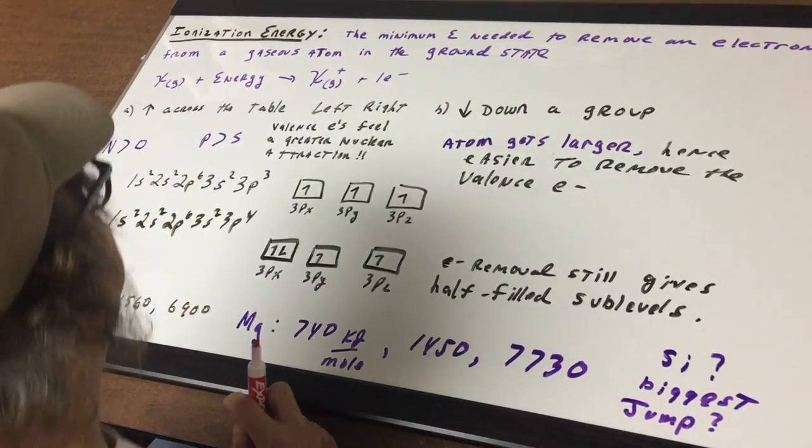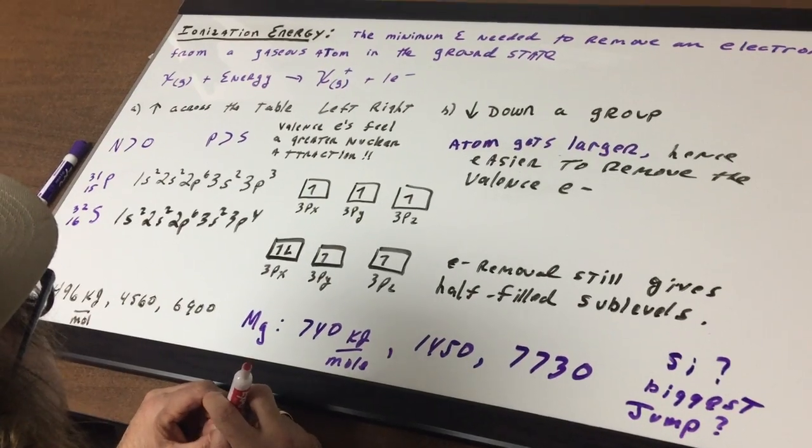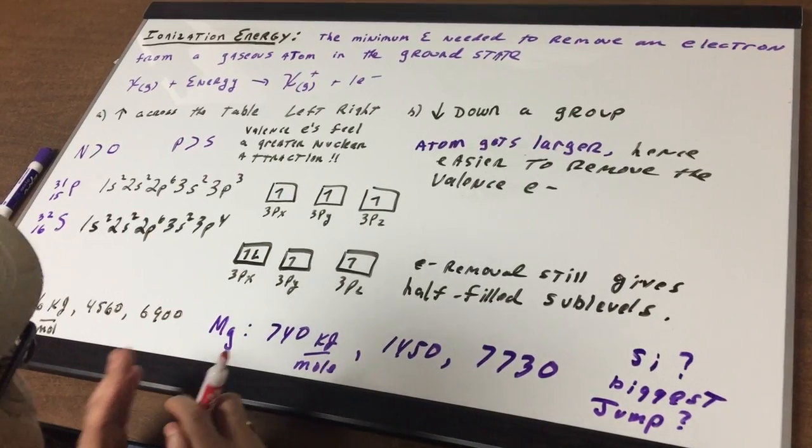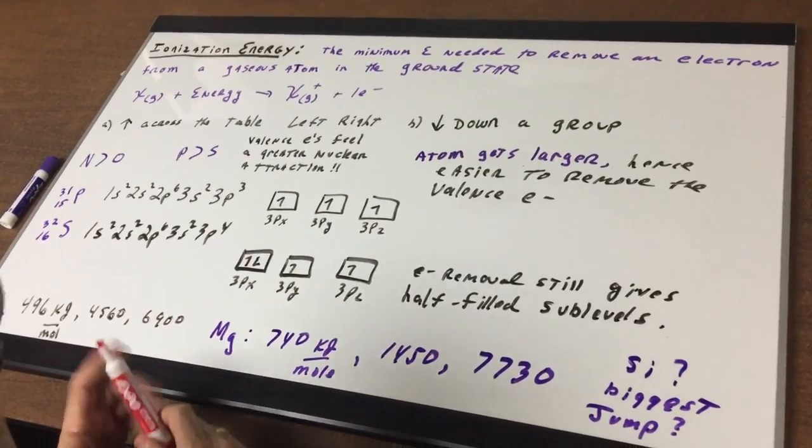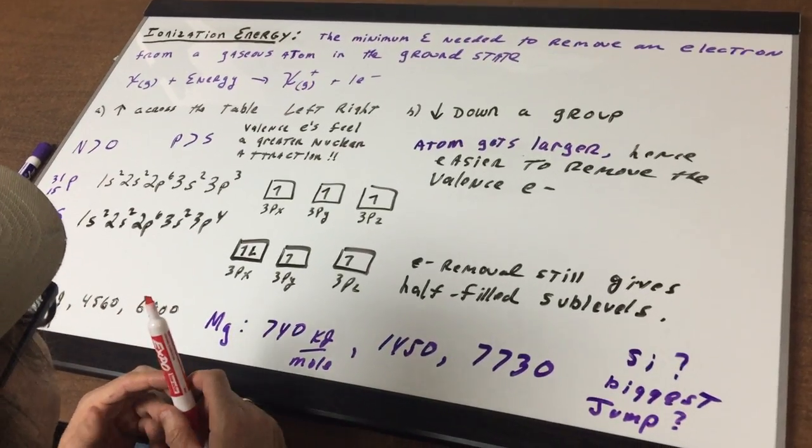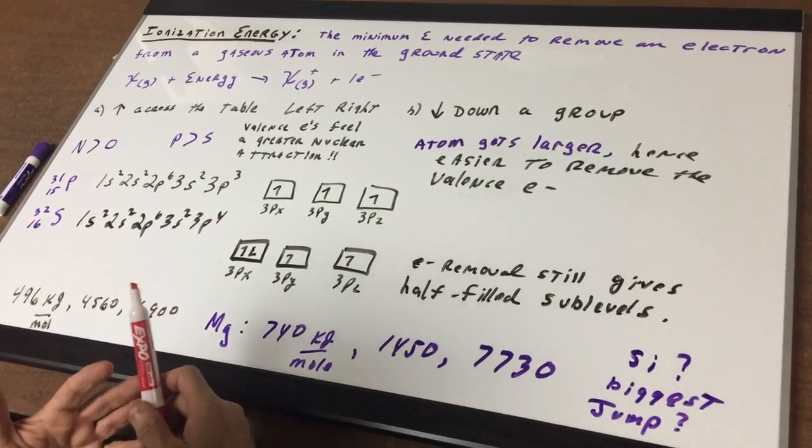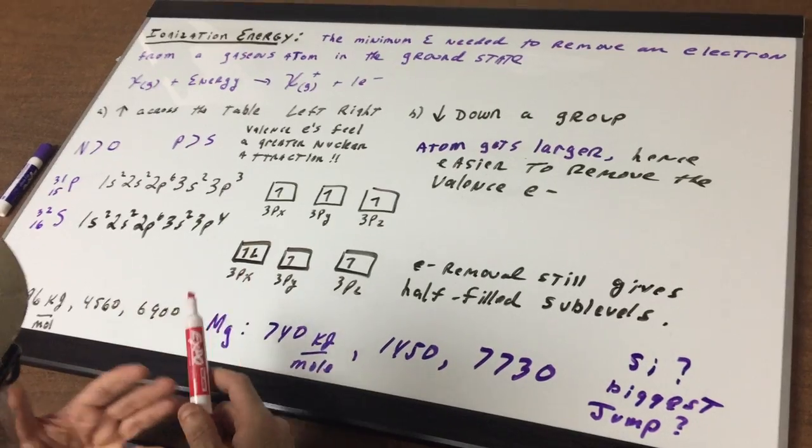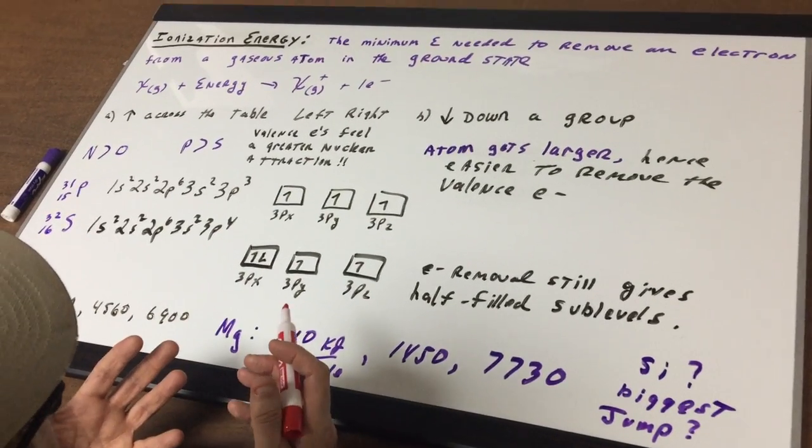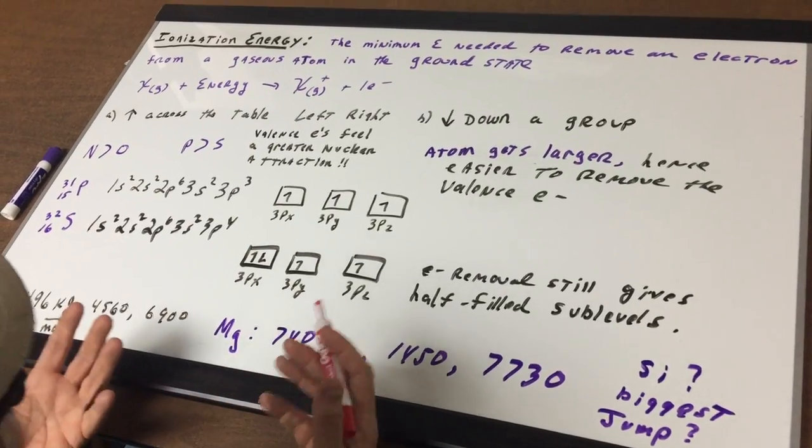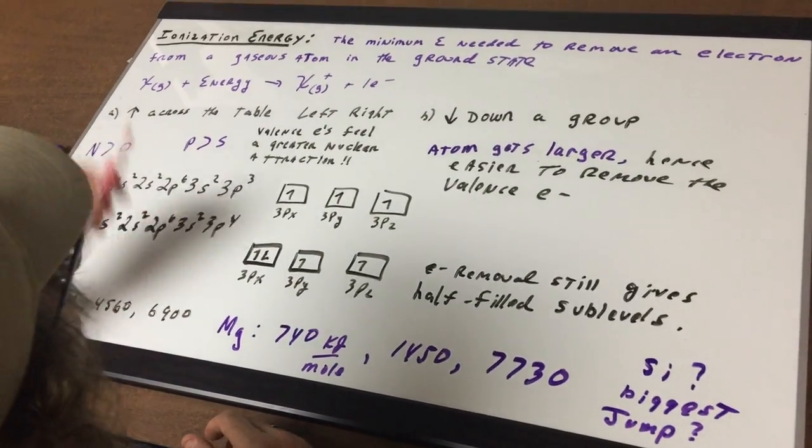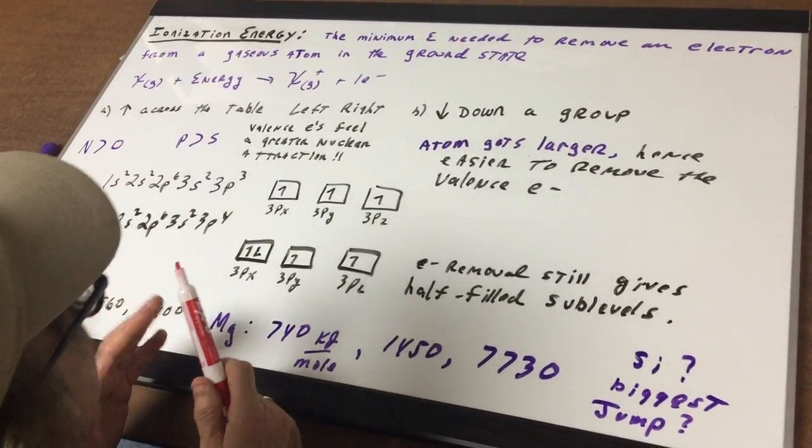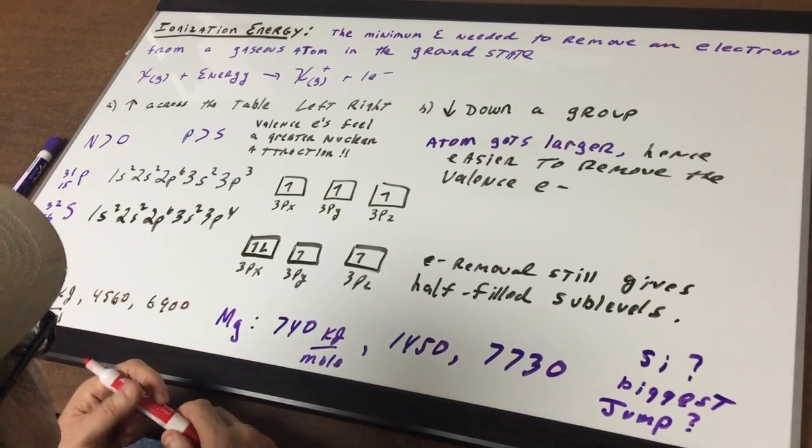Now the two trends that we need for the DAT exam is to understand as you go across the table from left to right ionization energy is increasing. As you go from left to right, if you look at a periodic table the atomic number is increasing. If the atomic number is increasing, that means that those valence electrons feel a greater nuclear attraction. If there's greater nuclear attraction and they're attracted to the nucleus, more energy is going to be needed to remove them. So going across the table our argument has to do with the attraction that those electrons have for the increasing nuclear charge.